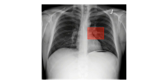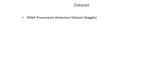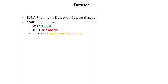For this project, we are using the RSNA pneumonia detection dataset from Kaggle. This dataset contains chest radiograph images from more than 25,000 patients. Among these patients, we have 8,525 normal images and 8,964 pneumonia-affected images. We also have another category of images that look similar to pneumonia-affected images, but they represent diseases other than pneumonia.